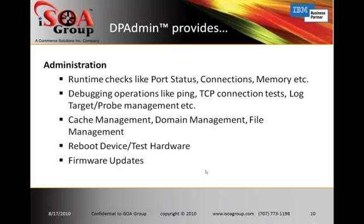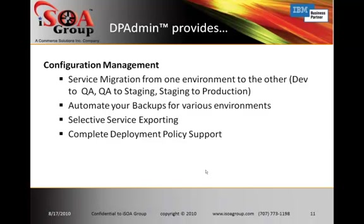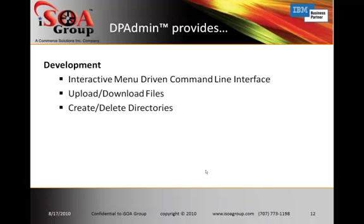On the configuration management side, there's service migration from one environment to the other. You can automate your backups for various environments. You can do selective service exporting — this is a really key feature because in DataPower you have to export a group of services that are all part of one bundle, but this allows you to reach into that bundle and pull out selective services, so if there's one service in there you can just export that versus many. On the development side, the interactive menu command line interface makes uploading XML, XSL, and stylesheets easy. It also allows exporting and importing of services, organizing directories and folders, and performing runtime status checks.